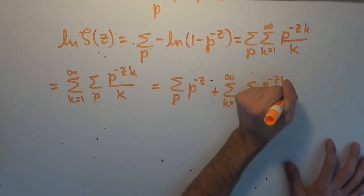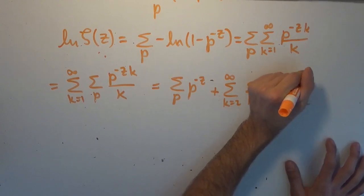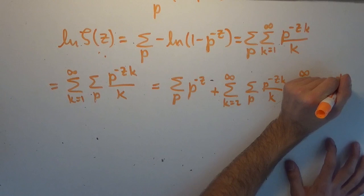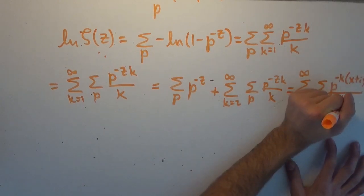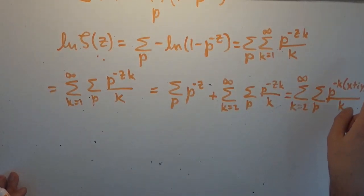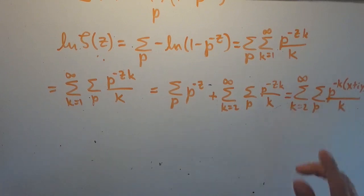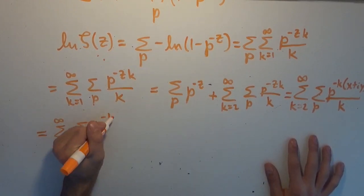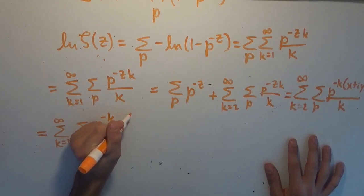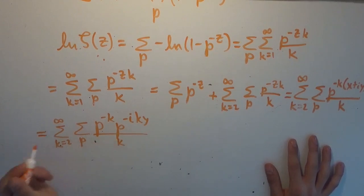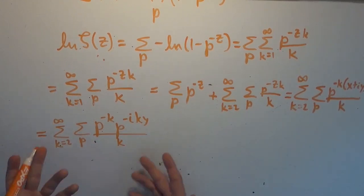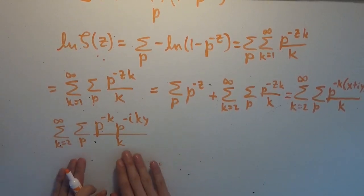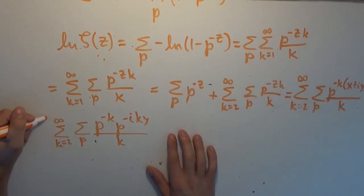Z is a complex number, so we can write this as the sum from k equals 2 to infinity over the primes of p to the minus k times x plus iy, where x plus iy is z, all over k. I'm just replacing z with its complex number form. I'm going to break this up by the rules of powers — I can break the sum of the powers into a product of the bases. So we get the sum from k equals 2 to infinity over the primes of p to the minus kx times p to the minus iky, all over k. Now we're simply going to consider the modulus of this quantity.